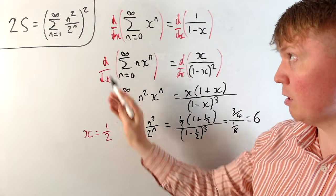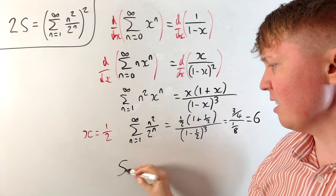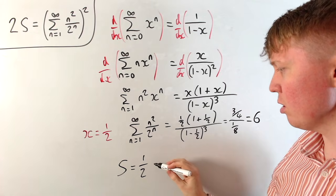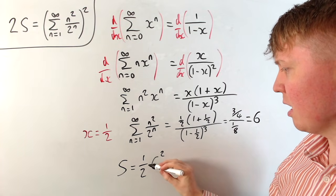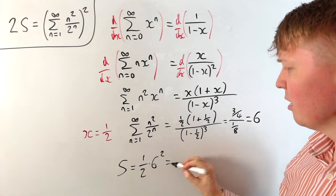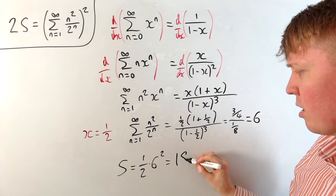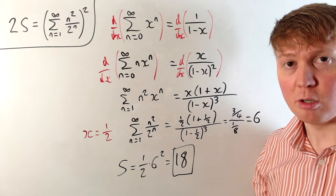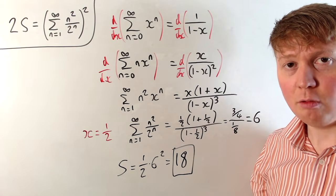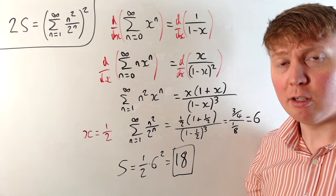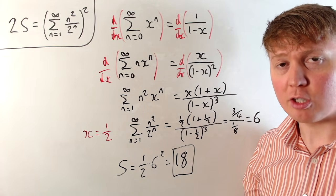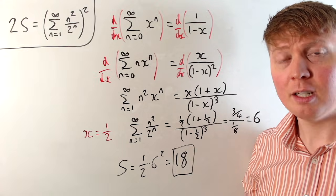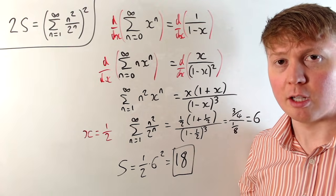So we have 2S equal to 6 squared, which means S equals a half times 36, giving us 18 as our value for the original double sum. That's a really satisfying answer, even if we did gloss over some of the details like differentiating term by term and exchanging the order of summation earlier.